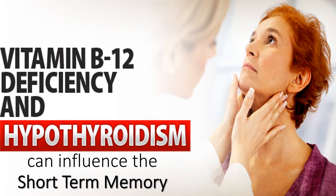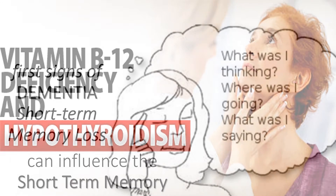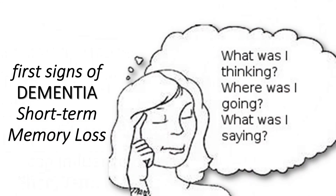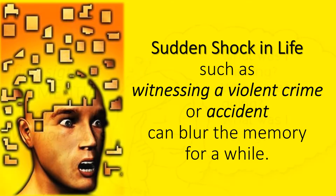Vitamin B12 deficiency and thyroid disease can influence short-term memory. One of the first signs of dementia is short-term memory loss. Sudden shock in life, such as witnessing a violent crime or accident, can also blur the memory for a while.